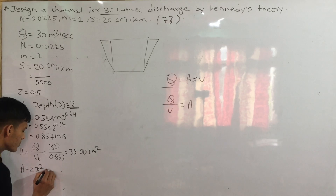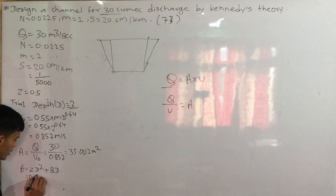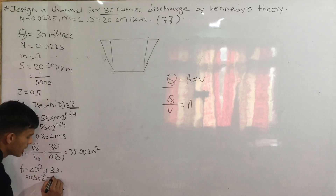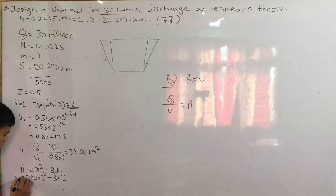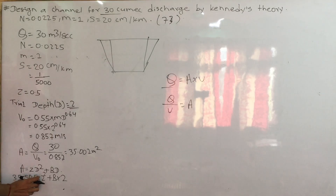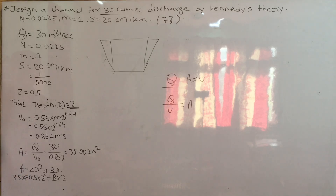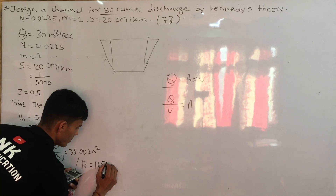The side slope model: area equals side slope squared times depth squared, plus base into depth. Side slope is 0.5, depth is 2, and bed width is 0.2. Area is calculated. We multiply, giving 35.002 minus 2, which is 33.002. Then divide by 2, giving a value of 16.501.